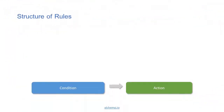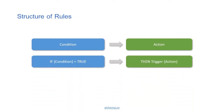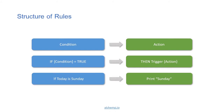Before we start defining the rules, let's talk about the structure of the rules. Each rule in the rule engine contains two parts: the condition part and the action part. This is just like an if-then statement — when the if condition is true, the rule engine will trigger the corresponding action. For example, the condition is 'if today is Sunday', and the action is 'print Sunday', so the complete rule is: if today is Sunday, then print Sunday.